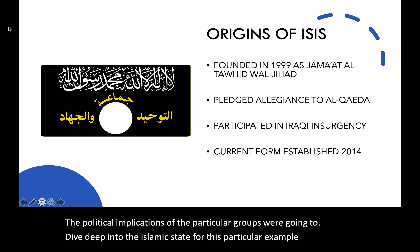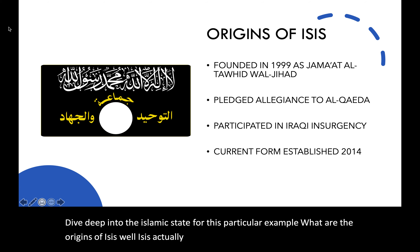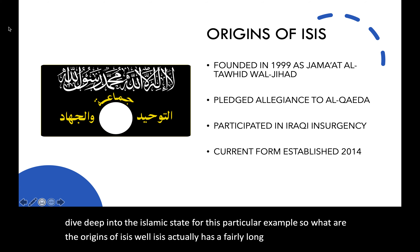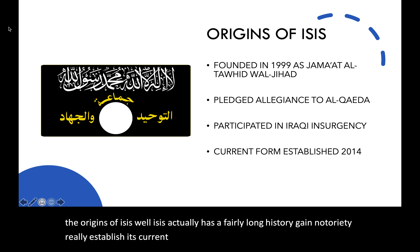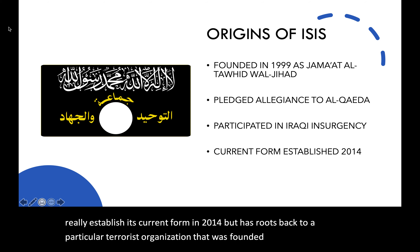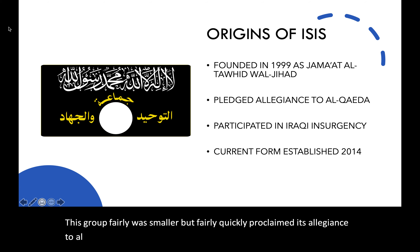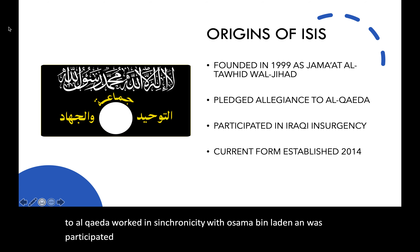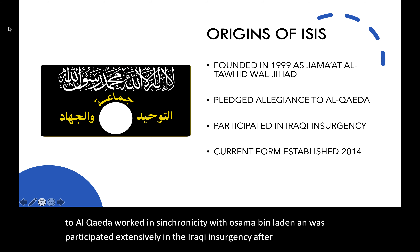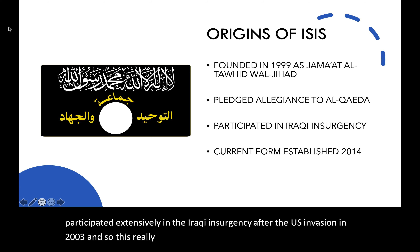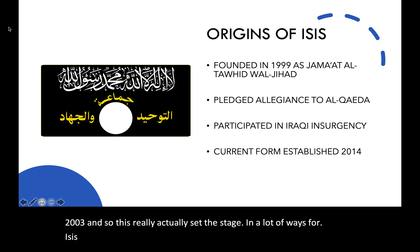What are the origins of ISIS? ISIS actually has a fairly long history. It gained notoriety and really established its current form in 2014, but has roots back to a terrorist organization founded in 1999. That group was smaller but fairly quickly proclaimed its allegiance to al-Qaeda, worked in synchronicity with Osama bin Laden, and participated extensively in the Iraqi insurgency after the U.S. invasion in 2003, which really set the stage for ISIS and its ability to emerge onto the scene.